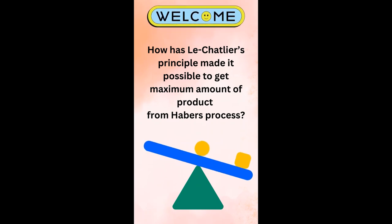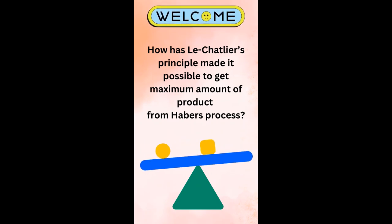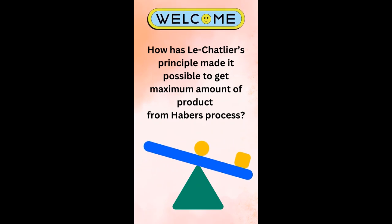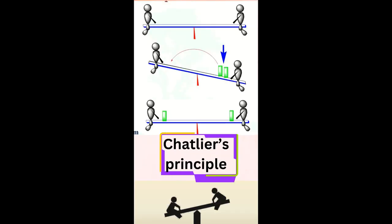How has Le Chatelier's principle made it possible to get the maximum amount of product from Haber's process? Le Chatelier's principle is a principle of chemistry used to predict the effect of a change in conditions on chemical equilibria.